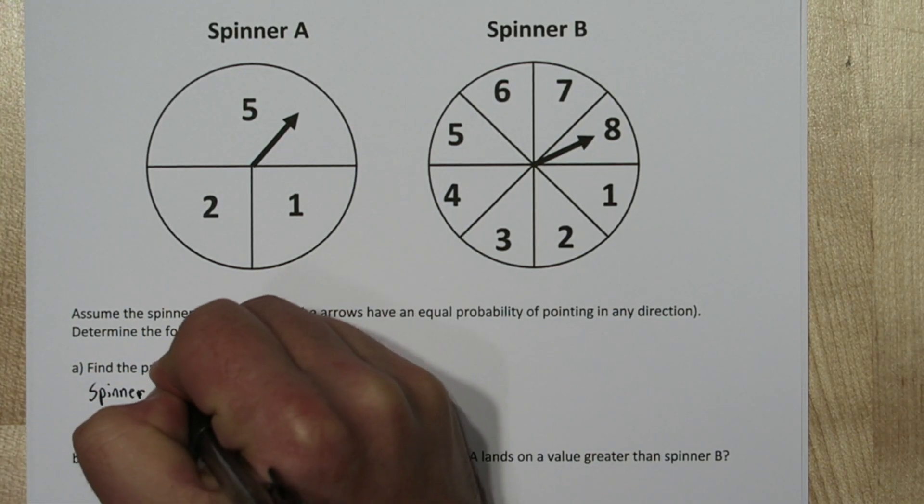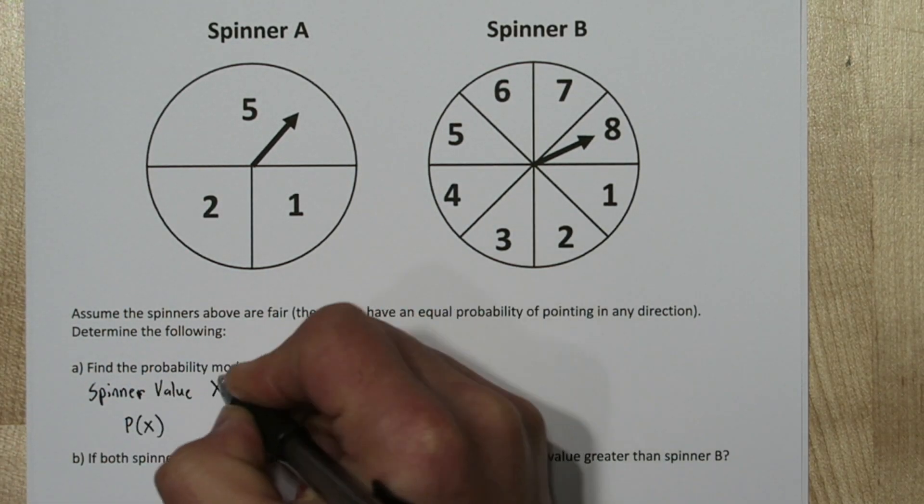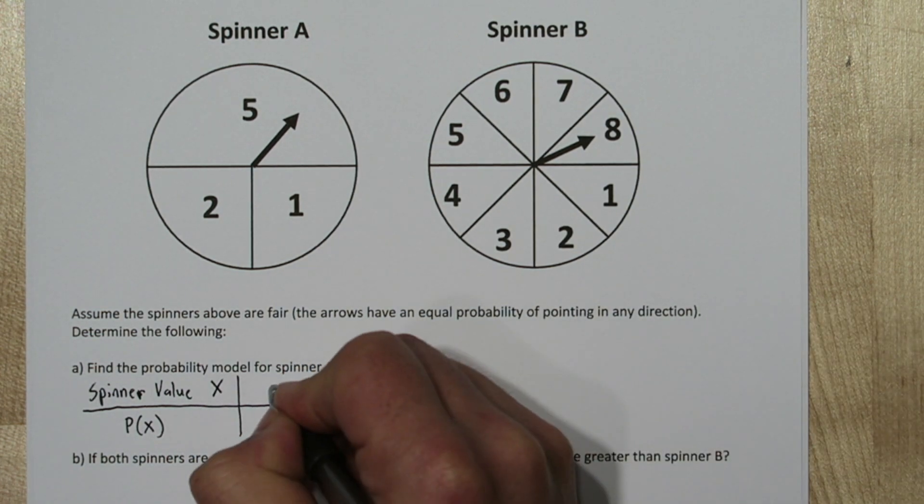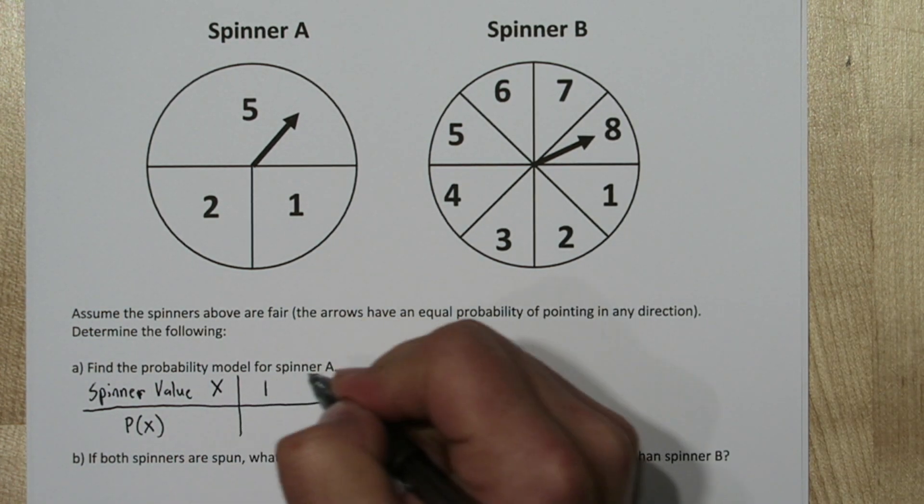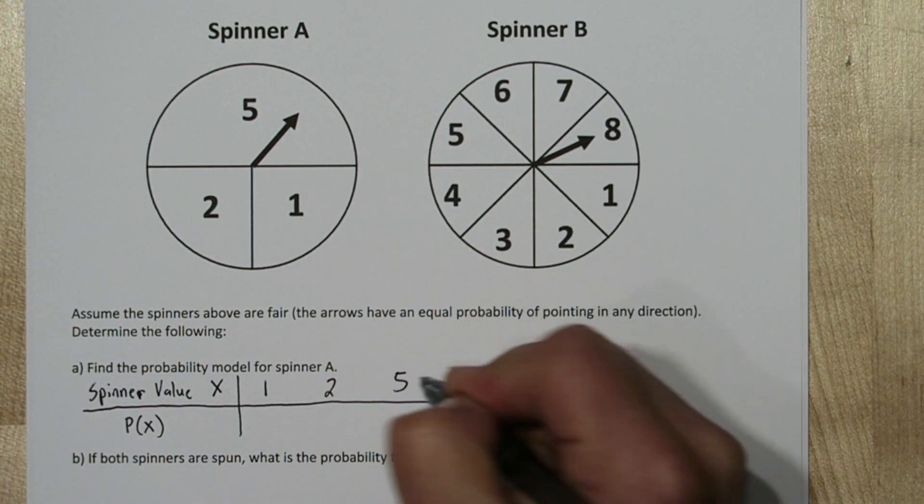A probability model has two characteristics. First, it lists all the outcomes. So in this case, spinner A's outcomes could either be a 1, 2, or a 5.